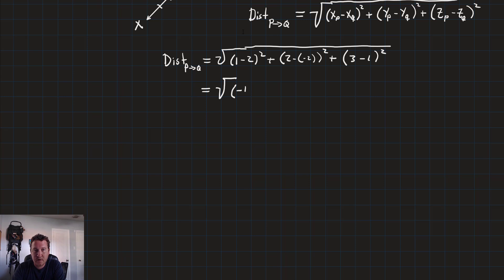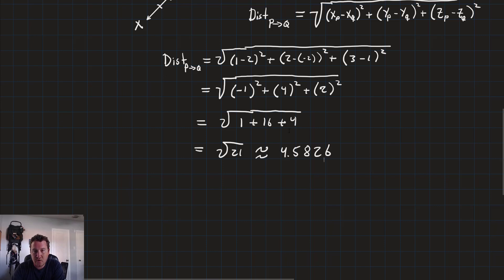I think it's still square rooted. And that's going to give us negative 1 squared, plus 4 squared, plus 2 squared, which evaluates to 1 plus 16 plus 4, which is going to be equal to the square root of 21, which is approximately equal to 4.5826.